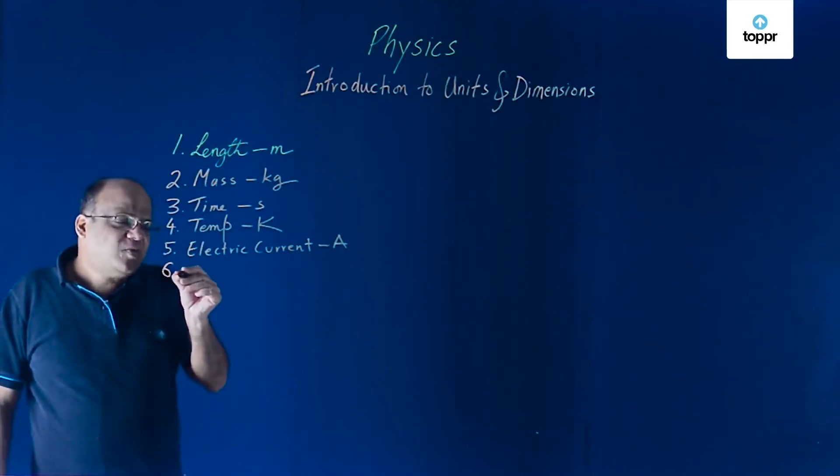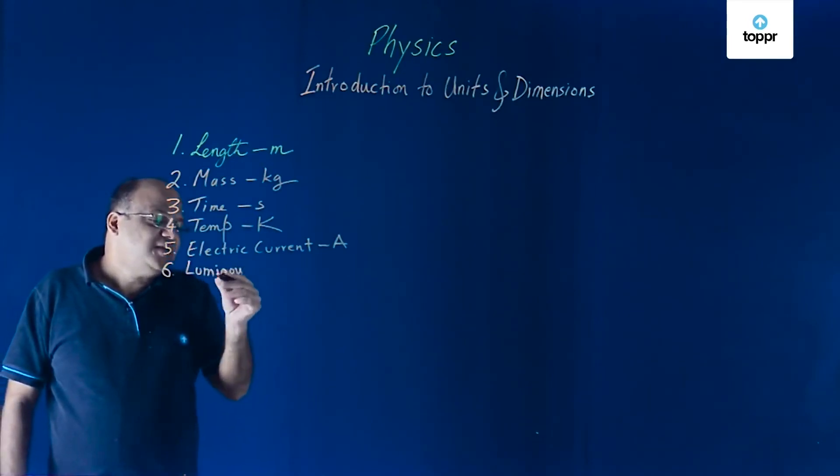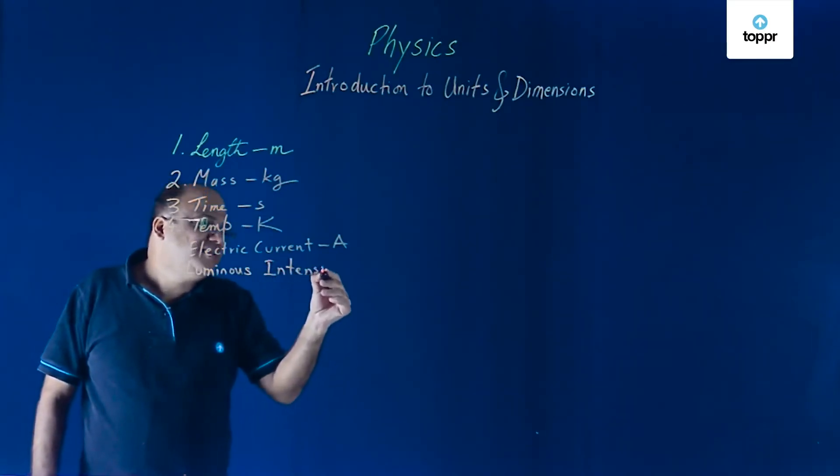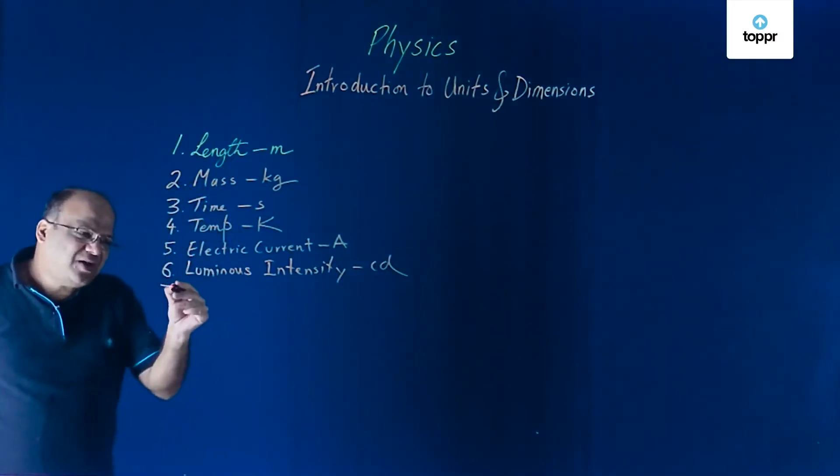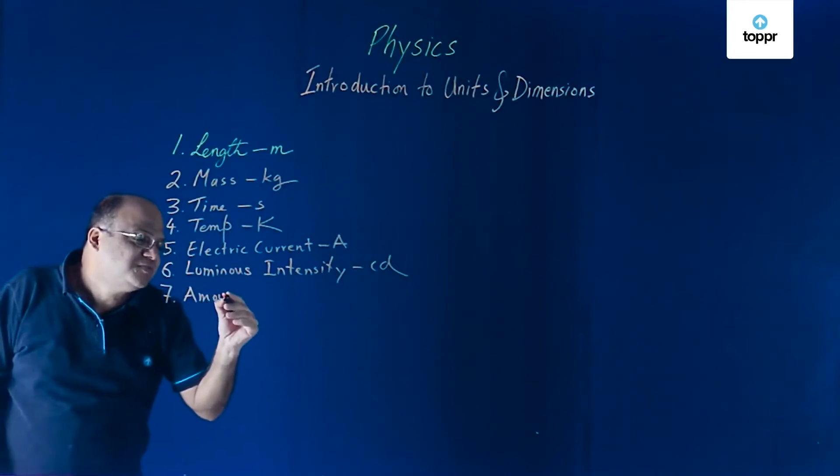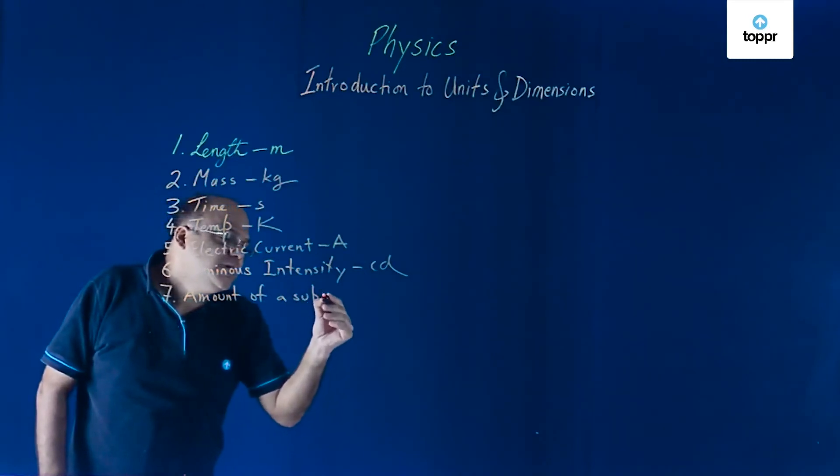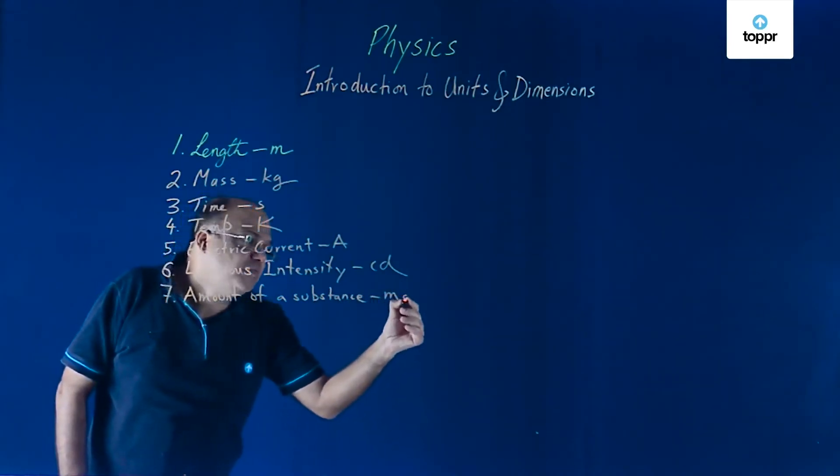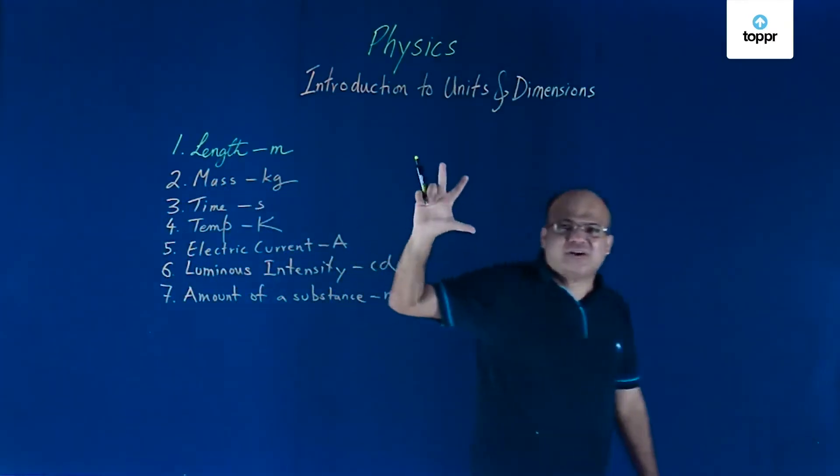Then we have got a quantity called luminous intensity. Luminous intensity we measure in unit called candela. Candela word has come from candles. Symbol is cd, small c, small d. And the last fundamental quantity which you learn more in chemistry, in physics also use that amount of a substance. Amount of a substance is measured in mole. M-O-L-E is the full name, short form is M-O-L, small m, small o, small l. So these are the seven fundamental quantities in SI.